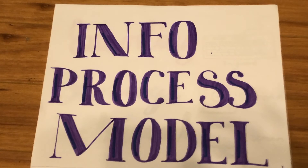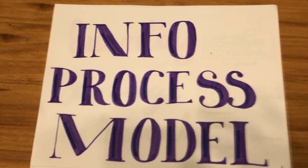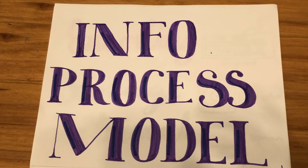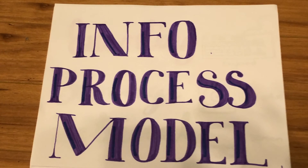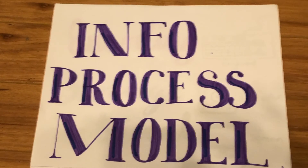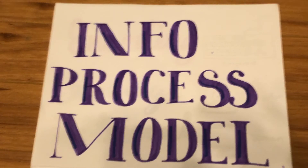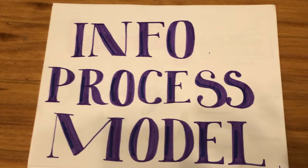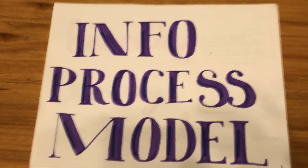This is our video about the information processing model. It is a way to think about how the brain encodes, stores, and retrieves memories. Encoding is how the brain gets information into it. Storage is how the brain retains the information, and retrieval is how it gets it back out.